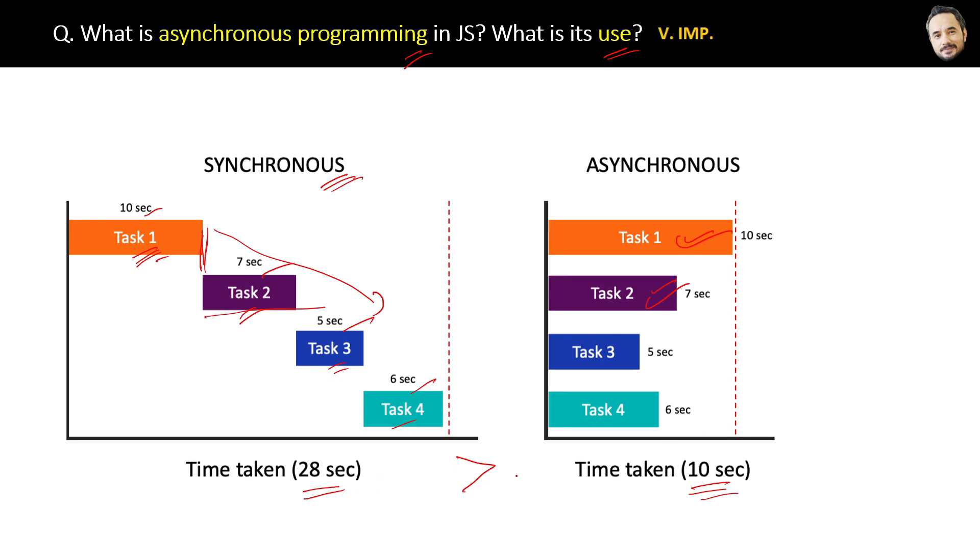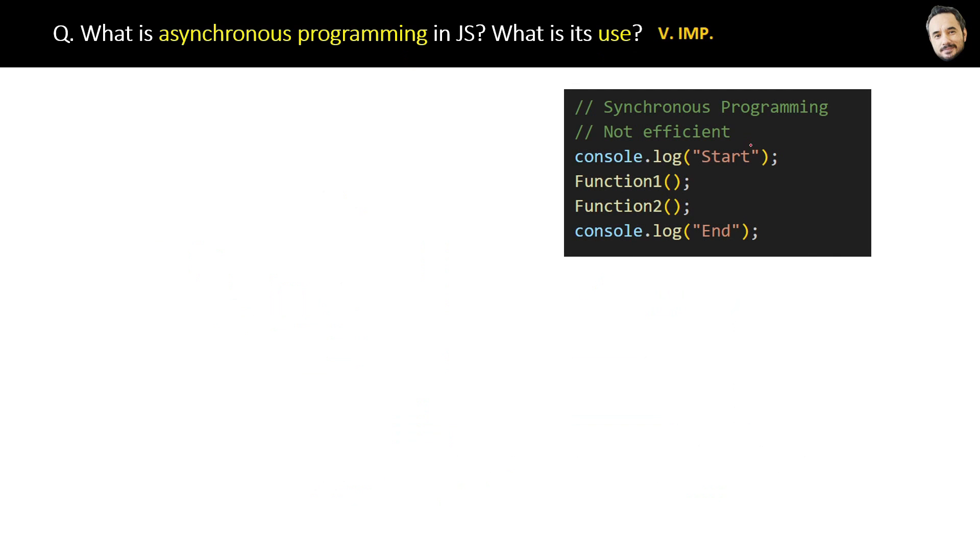That is the high-level idea. Okay, now let's see the code. What are the problems in synchronous programming which we can solve by asynchronous programming? Suppose we have the synchronous code: we are starting, then we are calling two functions one by one, and then we are logging the end statement. Now suppose that function is a very time-consuming function like this.